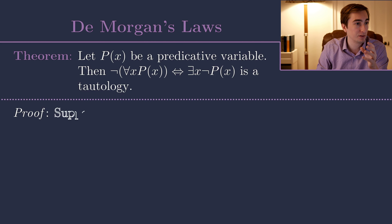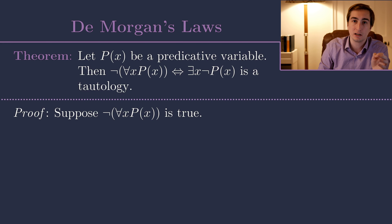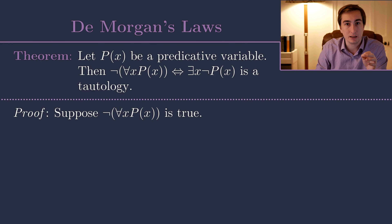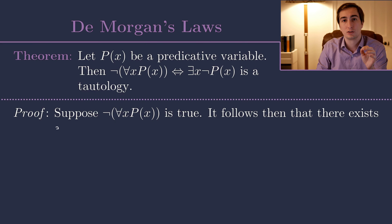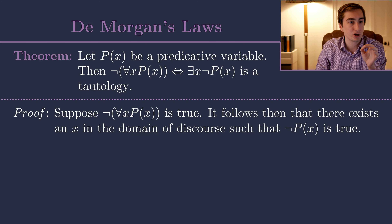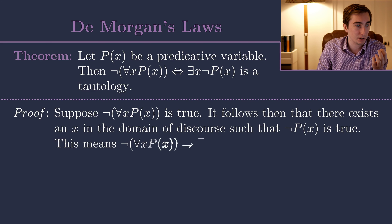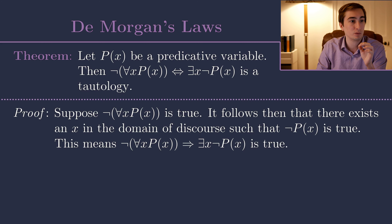Let's start with the left-hand side. Suppose 'not for all x, P(x)' is true. What does that mean? It means that there exists an x in the domain of discourse such that 'not P(x)' is true. But that's exactly what the right-hand side of De Morgan's law says. So we've shown that if the left-hand side is true, the right-hand side is true, and therefore the implication is true.